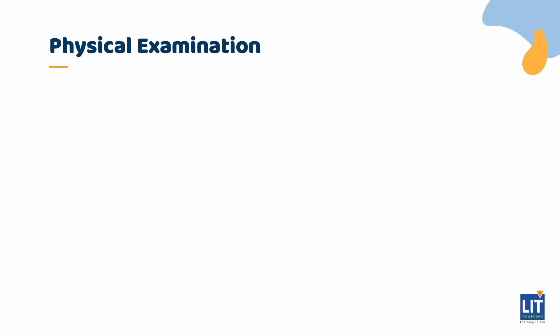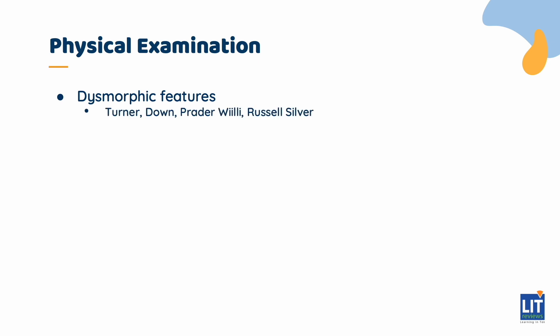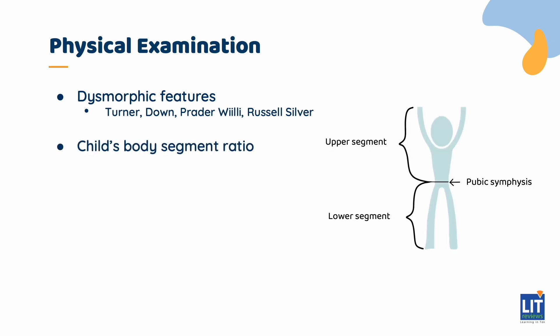A systematic full physical examination is required. On inspection, you must look for dysmorphic features suggesting an underlying syndrome or genetic abnormality such as Turner syndrome, Prader-Willi, Russell-Silver, etc. You would need to calculate a child's body segment ratio, as this would give a clue as to diseases which would affect the spine such as skeletal dysplasia, or diseases which affect limb growth such as rickets.